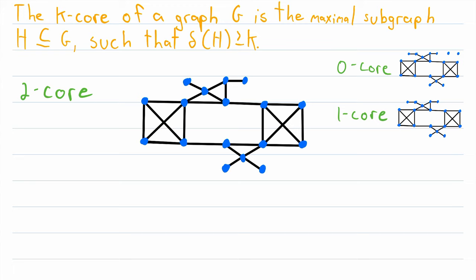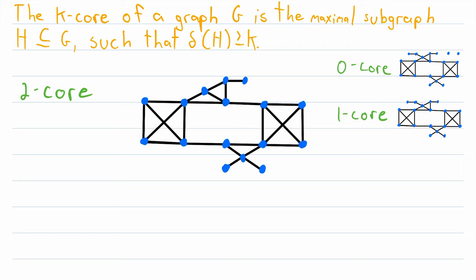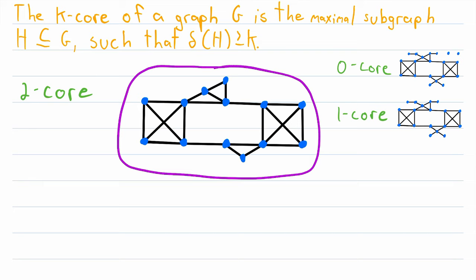This is a basic algorithm for finding the K-Core of a graph: to find the two-core, we delete every vertex that doesn't have degree at least two, and once there are no more vertices to delete, we've pinned down the two-core. This vertex here also has degree one, so we erase it. The adjacent vertex had degree three, but after erasure it now has degree two — that's perfectly fine, so it stays. The two vertices down here both have degree one, so we erase both of those. Every vertex left in this subgraph now has degree at least two, so this is the two-core of the graph.